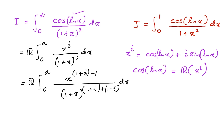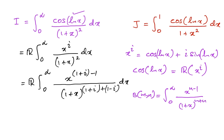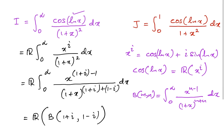Recall the beta function: beta of m, n equals the integral from zero to infinity of x to the (n minus 1) over (1 plus x) to the (m plus n) dx. So we can represent our integral as the real part of beta of (1 plus i, 1 minus i).